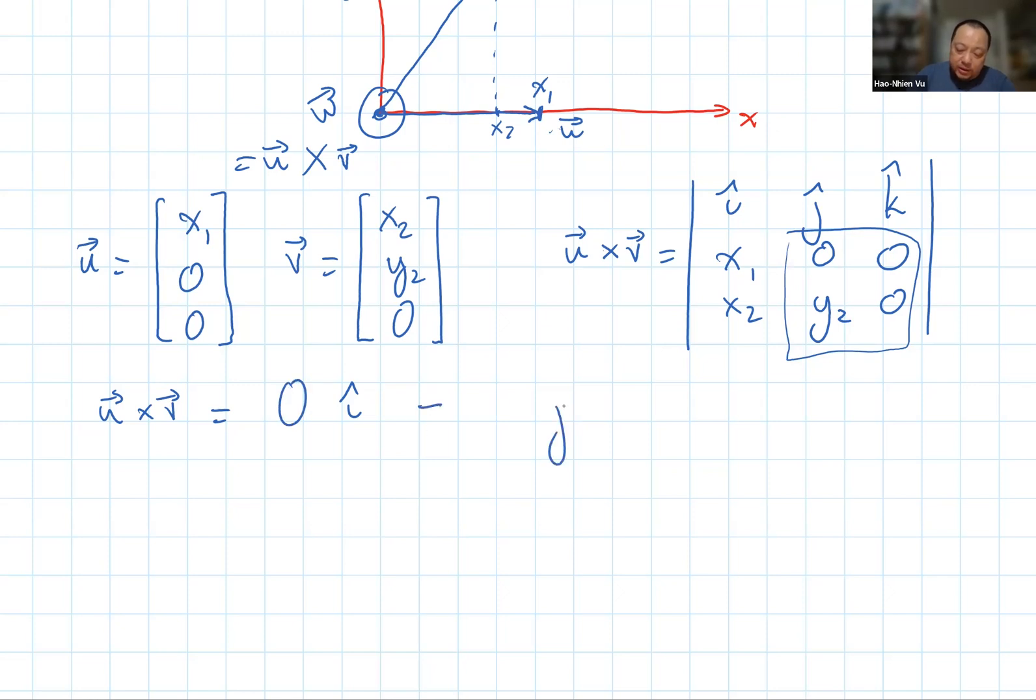Minus something on the j coordinate. On the j coordinate, I have this product and that product. And that's also 0. And that is equal to x1, y2 times k. That's the cross product of u cross v.